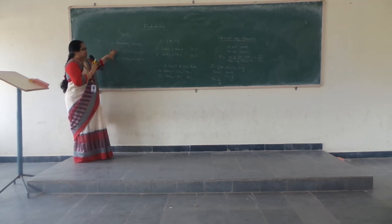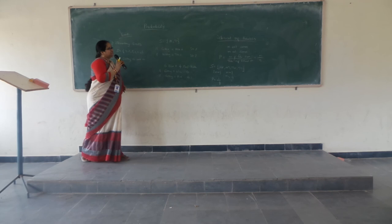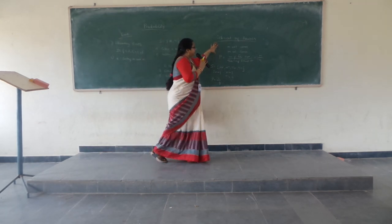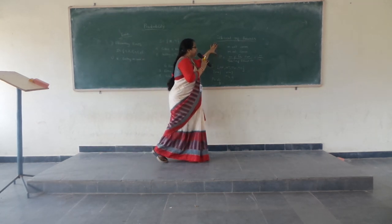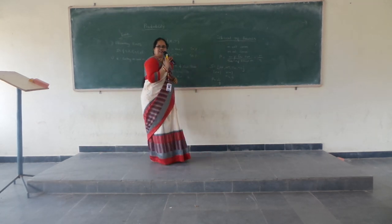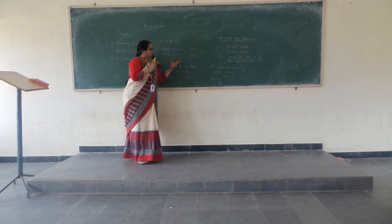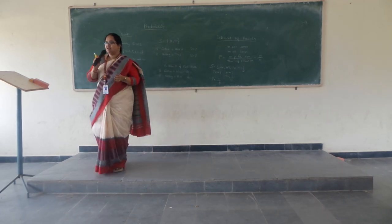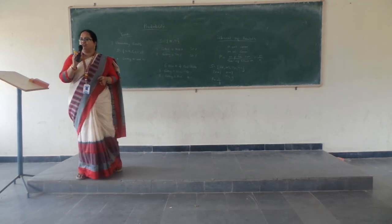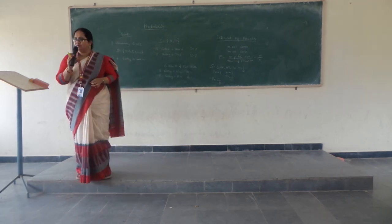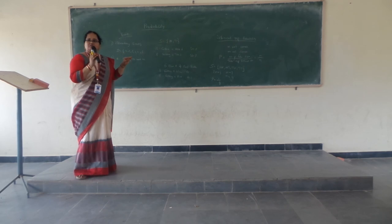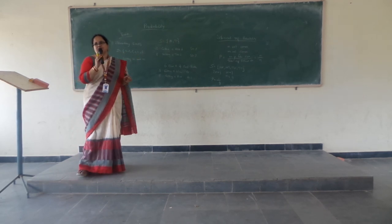So these are the two types of events, and this is the classical definition of probability. After that, these two scientists also defined the axiomatic definition of probability, without taking those two assumptions.